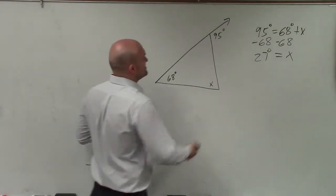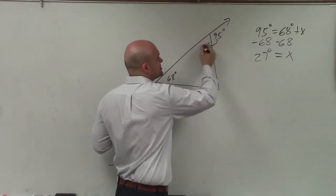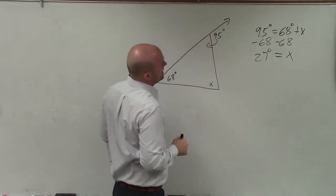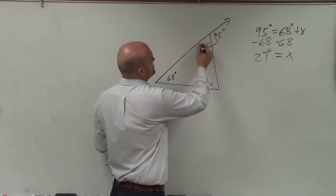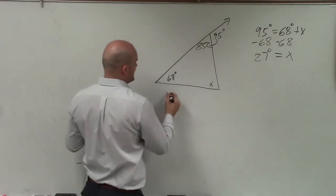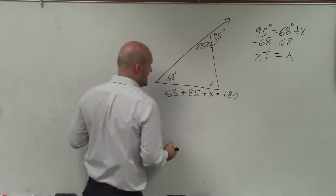The other way you guys could do this is you could also just use your triangle interior sum theorem. You know that these two angles, exterior and interior angles, are supplementary. So subtracting 180 minus 95 is going to be 85. And then using the idea that 68 plus 85 plus x equals 180.